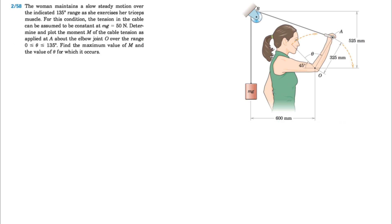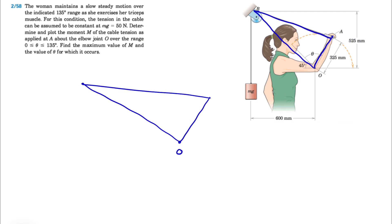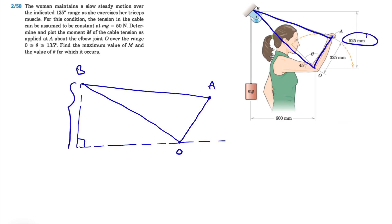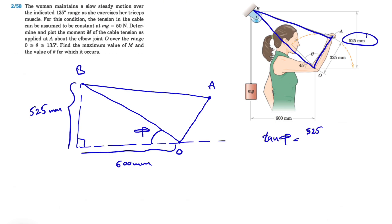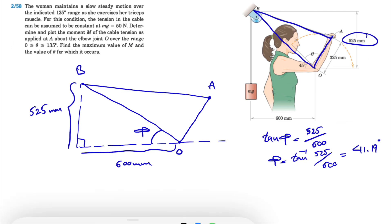We're going to look at this triangle for different values of theta. We have point O, point A, and point B. Drawing a horizontal line, we get a right triangle where the vertical side is 525 mm and the base is 600 mm. Calling this angle phi, we get tan(phi) = 525/600, so phi = arctan(525/600) = 41.19 degrees.